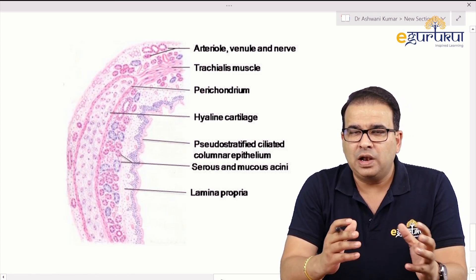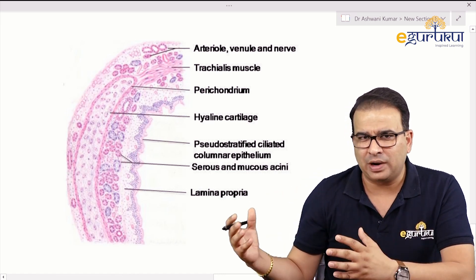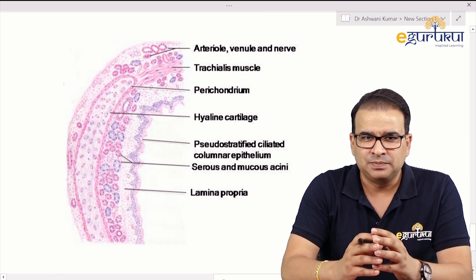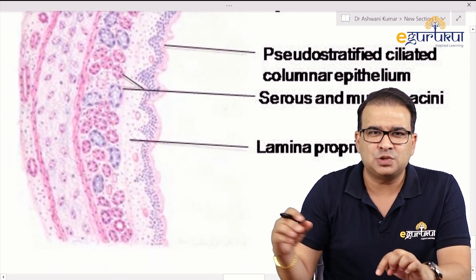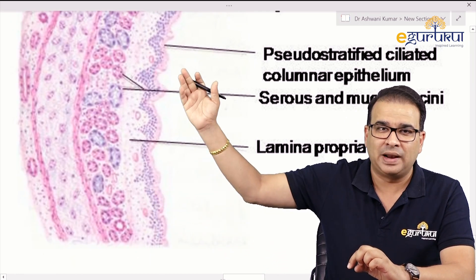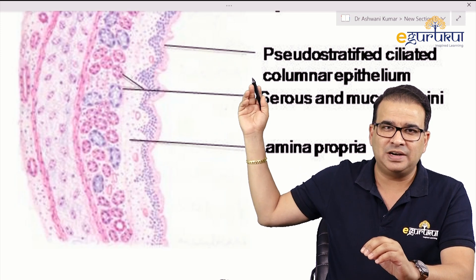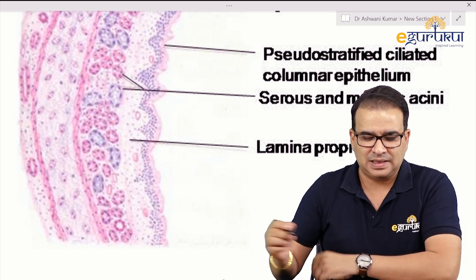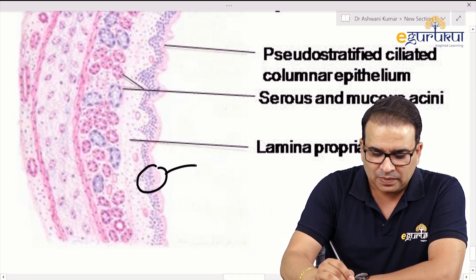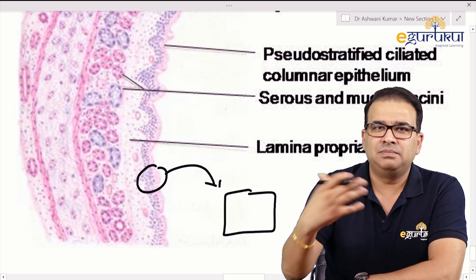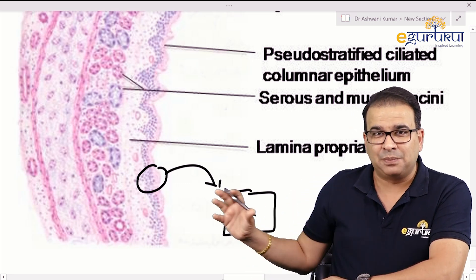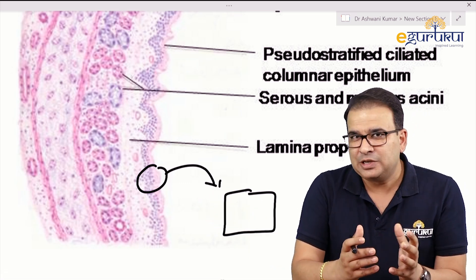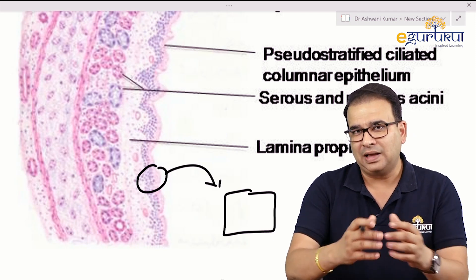Secondly, the view may not provide enough information. For example, this picture is a histological section of trachea — a computerized image from DeFiure. If I enlarge it, I cannot clearly see the pseudostratified ciliated columnar epithelium. If you're bound to draw something like that, just make a circle around it and draw a small inset separately with three or four cells to represent how the epithelium looks.